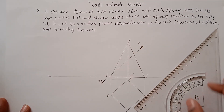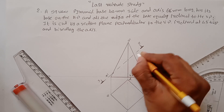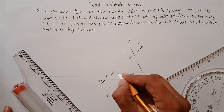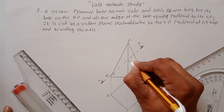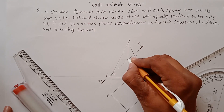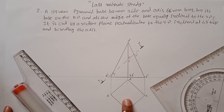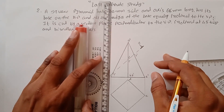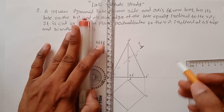Now find the points where the section plane intersects the pyramid edges. There are four points to find. Point 1 is on one edge, point 2-dash is where two edges meet, point 3-dash is on another edge, and point 4-dash is the fourth. Transfer each of these points to the corresponding edges.